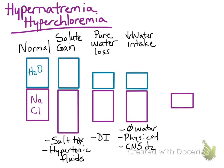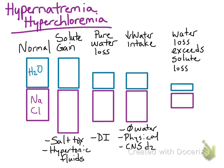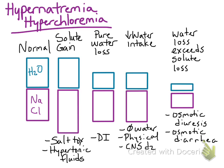The next reason involves both water and sodium and chloride being decreased, but water is decreased more compared to sodium and chloride. In this case, the patient is losing both sodium, chloride, and water, but water loss exceeds the solute loss. This occurs in osmotic diuresis and osmotic diarrhea, where some osmotically active particle in the urine or GI tract draws water into the urine or into the diarrhea.